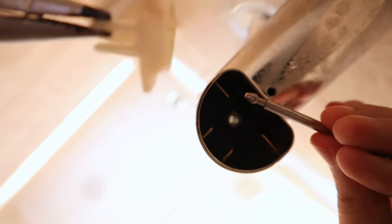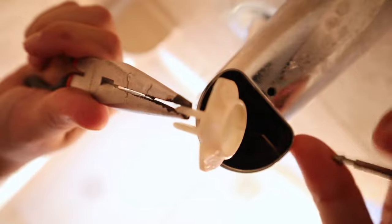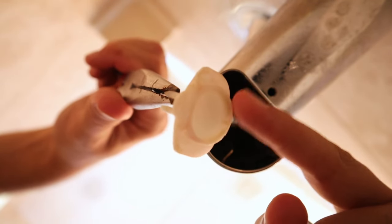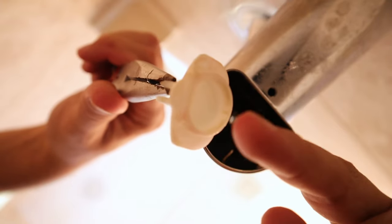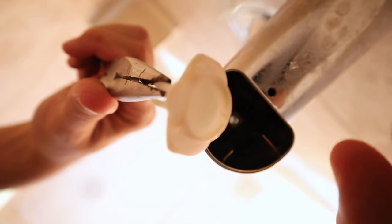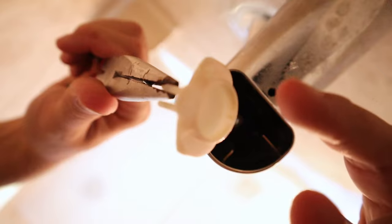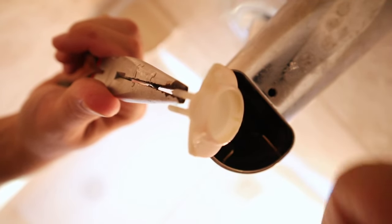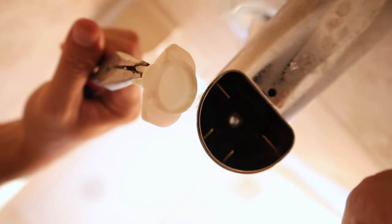Alright, so now that I've got the lift rod separated from the gate, when I turn this gate over—and you saw when I removed it that nothing fell out—but on the bottom side here, there should be a seal in here. So this is obviously the problem. There's no seal in here in order to seal off the water and then cause it to go up to the shower head. So now let's get started with installing the new gate and seal.